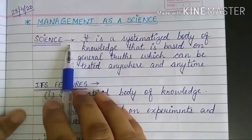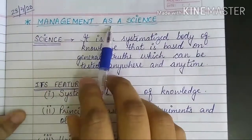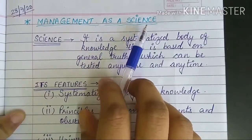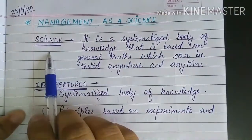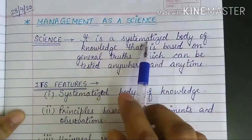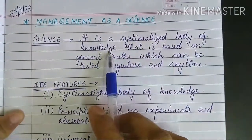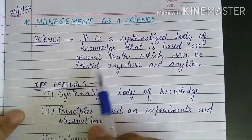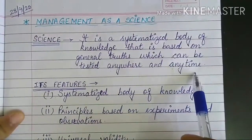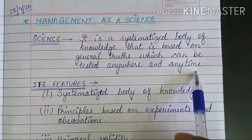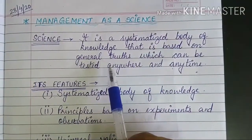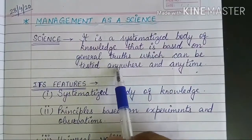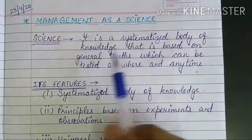Now we come to the nature of management: management as a science. Why is management considered a science? Science is a systematized body of knowledge based on general truths which can be tested anywhere and anytime, and is universally accepted.